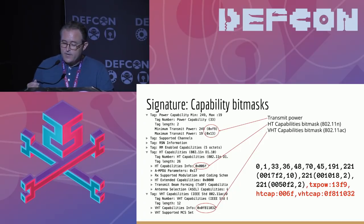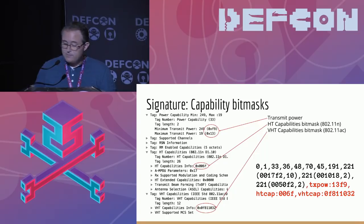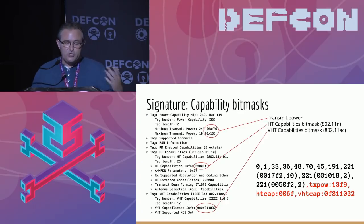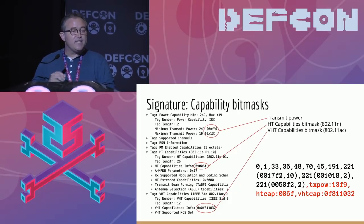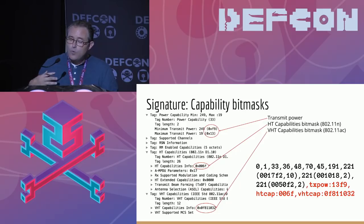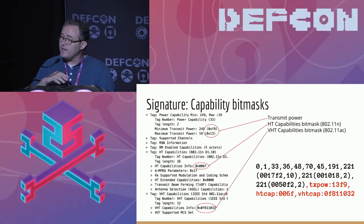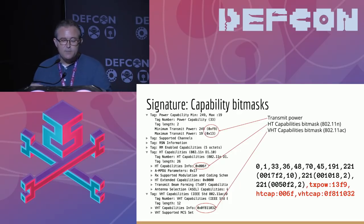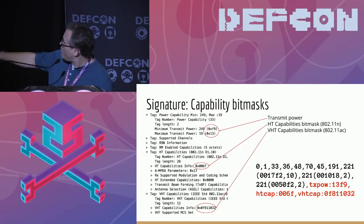In addition to the tag numbers, a few of the information elements contain capability bitmasks or other information useful in identifying the device. For example, 802.11n defines 16 bits of optional capabilities and .11ac defines 32 bits more. This is most strongly influenced by the chipset and the subset of the standard implemented by that ASIC. The transmit power information element depends strongly on the board design and antenna layout — two devices built by the same manufacturer using the same software and even the same chipset will often have different TX power values because their board layouts differ. The number of antennas is encoded in both the .11n and .11ac capabilities and is also indicative of board design. There's also an extended capabilities bitmask most strongly influenced by the driver and WPA supplicant software. These capability bitmasks are appended to the signature to further differentiate it.